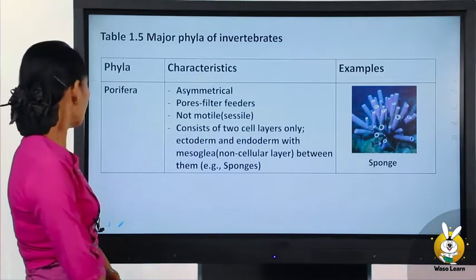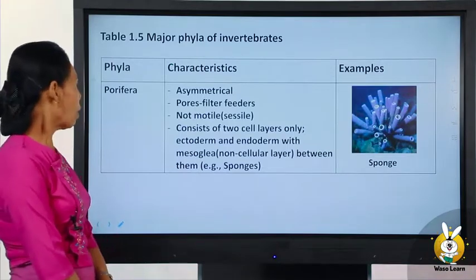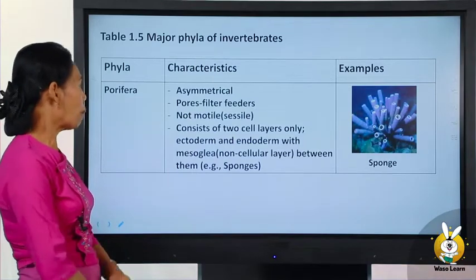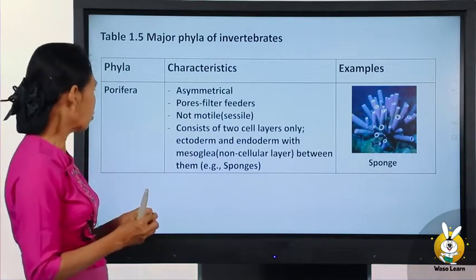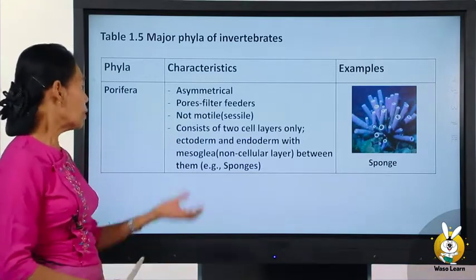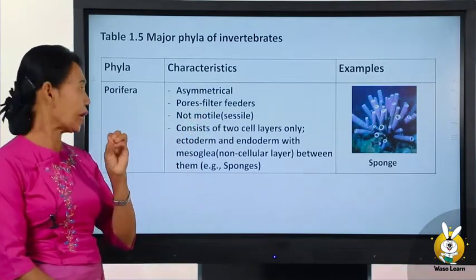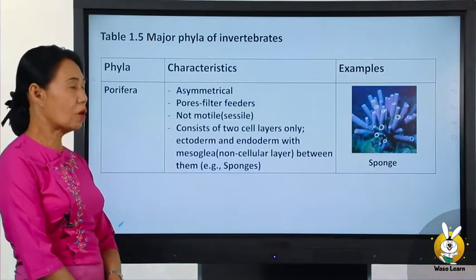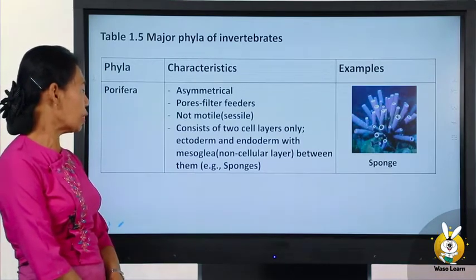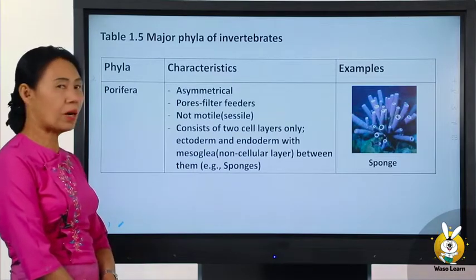Some animal species are asymmetrical. The simplest animals consist of only two cell layers: ectoderm and endoderm, with mesoglia — a non-cellular layer between them. Examples include sponges.